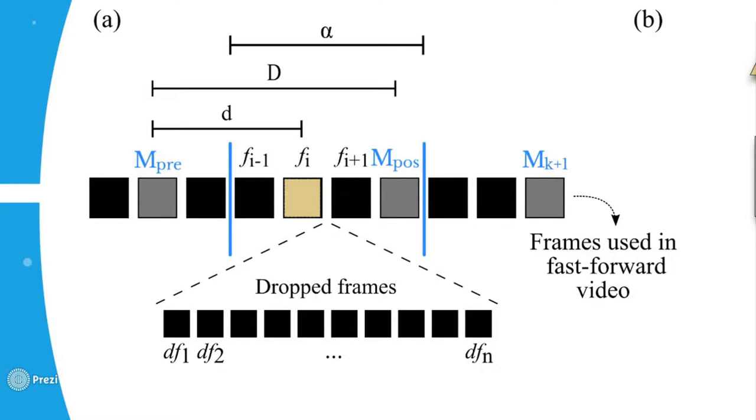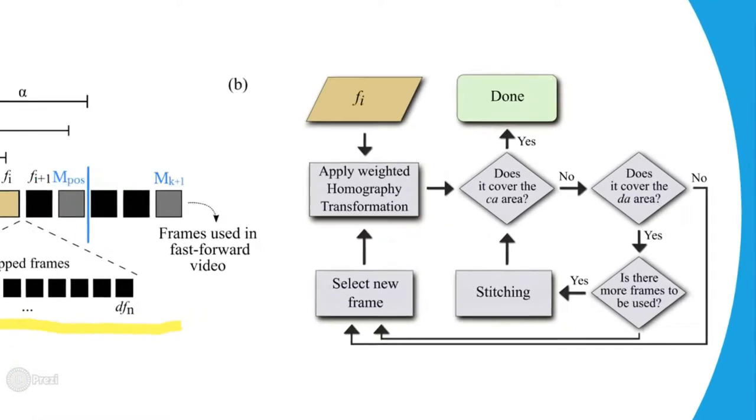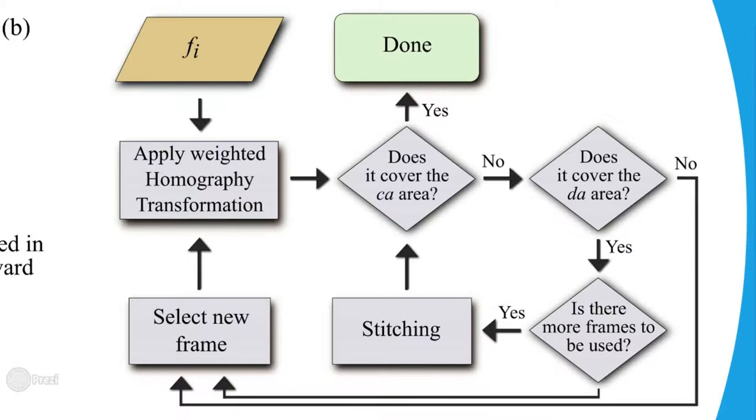The frames of the original video dropped by the fast-forwarding process are used to reconstruct the warped frames. The reconstruction procedure is an iterative process. We fill the warped image from the dropped area DA to the cut area CA with frames of the original video through image stitching. Once it covers the cut area completely, it is ready to compose the final video.